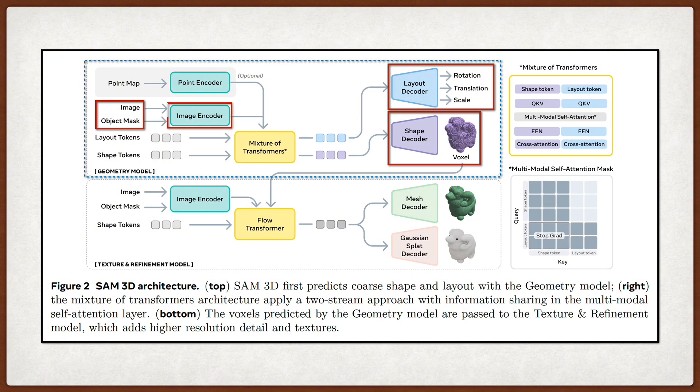To do this, they use a latent flow matching architecture, where the input image is processed by a DINOv2 encoder. They actually encode two versions of the input, where one is a cropped view of the object to get high-resolution details, and the other is the full image to capture the global scene context and occlusion cues, which is pretty important when you are dealing with messy real-world images. These embeddings are fed into what they call a mixture of transformers architecture, which allows them to process the shape tokens and the layout tokens somewhat independently, while still sharing information through a multimodal self-attention layer.